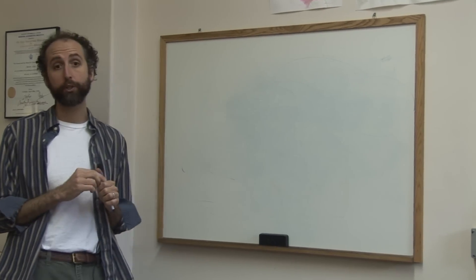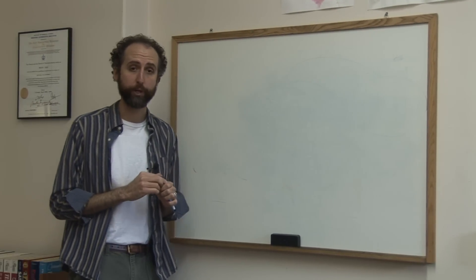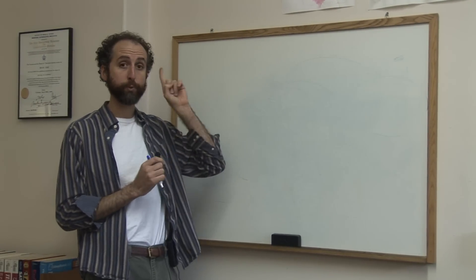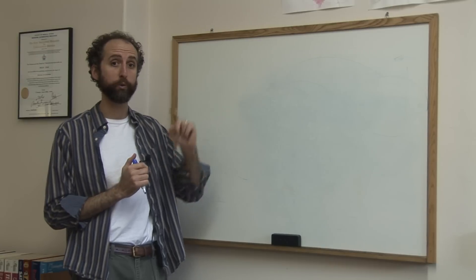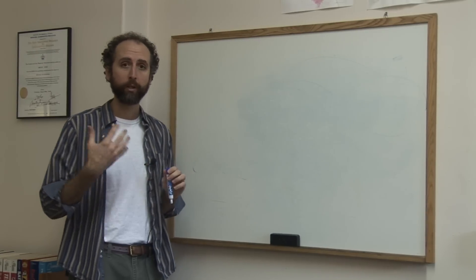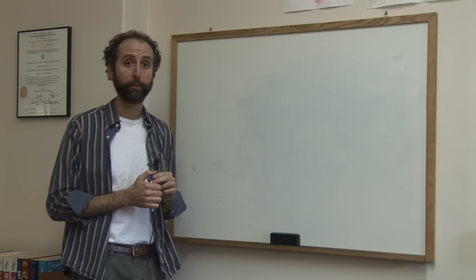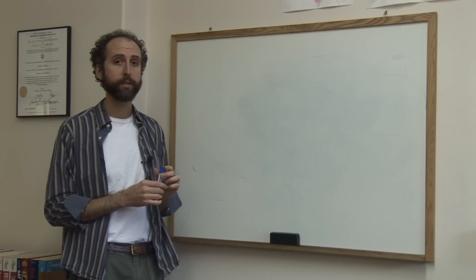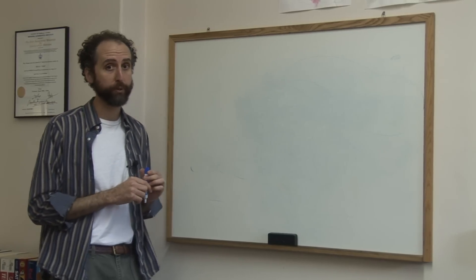So the example we just looked at was actually called a linear polynomial equation. It was linear because the x was to the first power. The exponent was 1. We call that linear. Let's take a look at a quadratic polynomial equation. Quadratic implies that the power is to the 2. The exponent is squared.